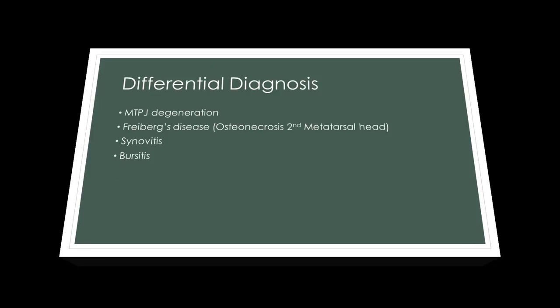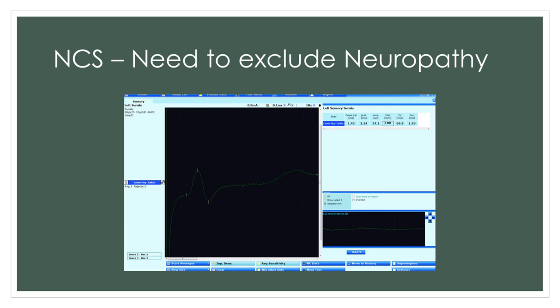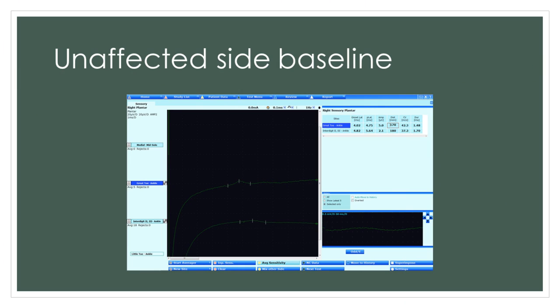Let's work through some neurophysiology here and see what we can show using our tests. The first thing that we need to do is to make sure that there isn't a background peripheral neuropathy. What you can see here on this slide is an example taken from a patient who has an excellent sural nerve sensory response — 37 microvolts in amplitude, that's 37 millionths of a volt — a very good size response, so there's no evidence of a background peripheral neuropathy. If we look at the unaffected side as a baseline measure, we can see that the sensory response from the great toe has an amplitude of 5 microvolts. And if we look at the interdigit 2 to 3 web space and stimulate there, we have also been able to pick up another sensory response of 2.1 microvolts.